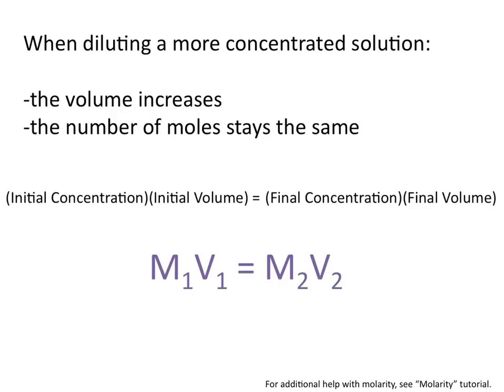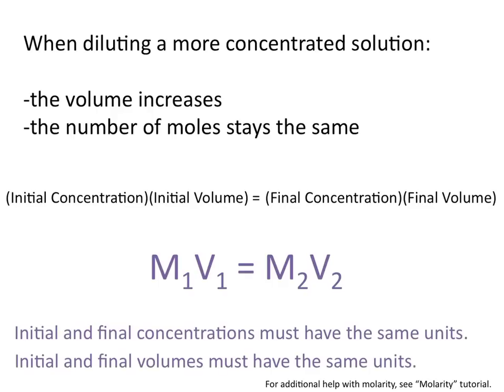If you look at the first equation — initial concentration times the initial volume — you know that what's really important is that your initial and final concentrations, or M1 and M2, must have the same units. And your initial and final volumes, or V1 and V2, must also have the same units.